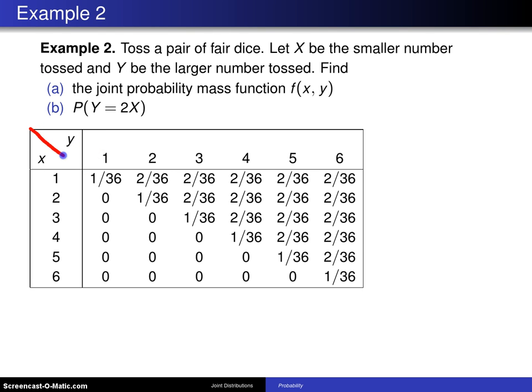x is the row values, and those x values, that x is the smaller number that is tossed. And here is y, which is also 1 through 6, that is the larger number tossed.